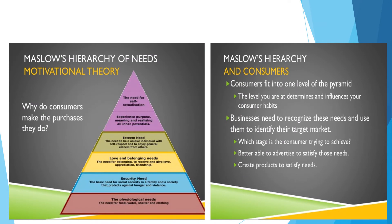Maslow's hierarchy of needs — motivational theory. At the top of the pyramid is self-actualization: the need to experience purpose, meaning, and realizing all inner potential. Second is esteem needs — the need to be a unique individual with respect and general recognition from others. Third is love and belonging needs — the need to receive and give love, appreciation, and friendship. Fourth is security needs — the basic need for social security in a family and a society that protects against hunger and violence. At the base are physiological needs — the need for food, water, shelter, and clothing.